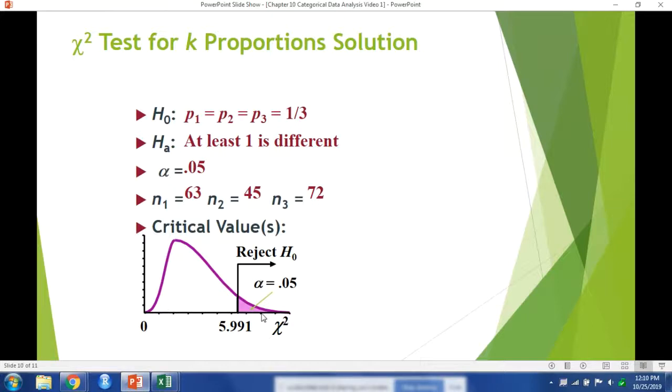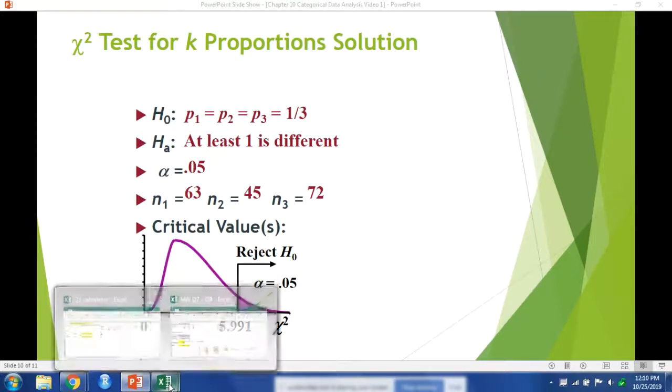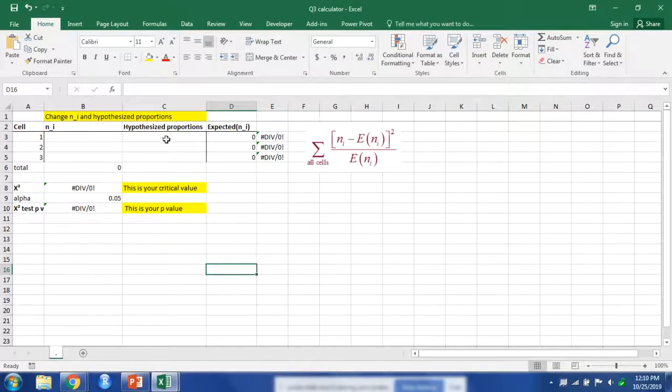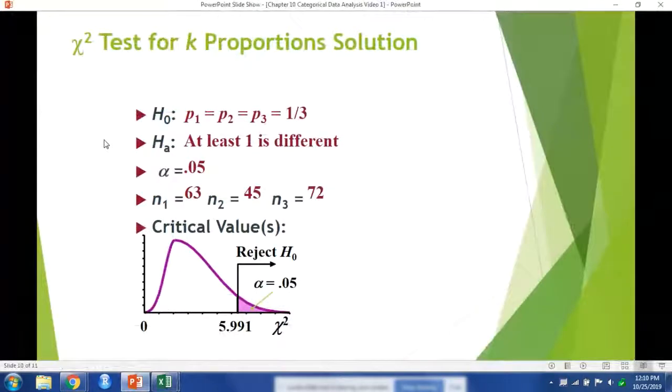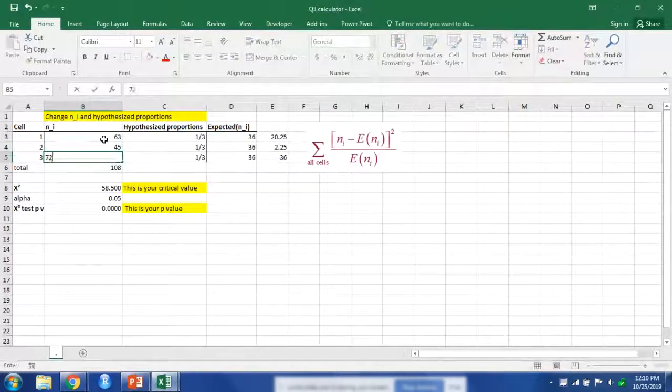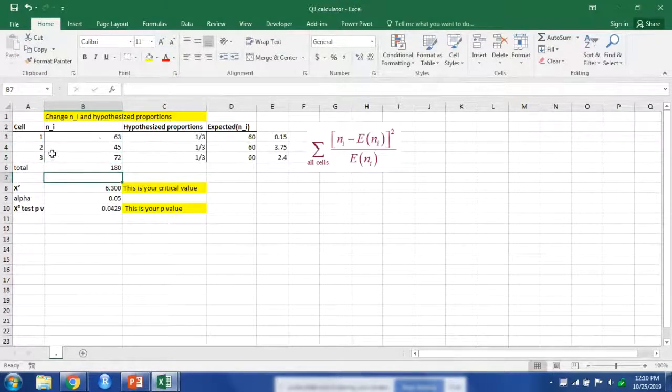But we can use Excel to calculate out the results for this. We created a calculator for you. So the hypothesized values were that each proportion was one third. Our actual observed values were 63, 45, and 72, which was 180.